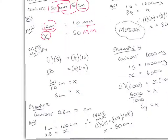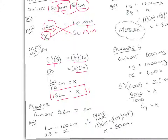Once we've written down that 1 centimetre equals 10 millimetres and x equals 50 millimetres, we simply cross-multiply. So 1 times 50 equals x times 10, giving us 50 equals 10x. Dividing both sides by 10, we get x equals 50 over 10, so x equals 5 centimetres. Therefore 50 millimetres is equal to 5 centimetres.